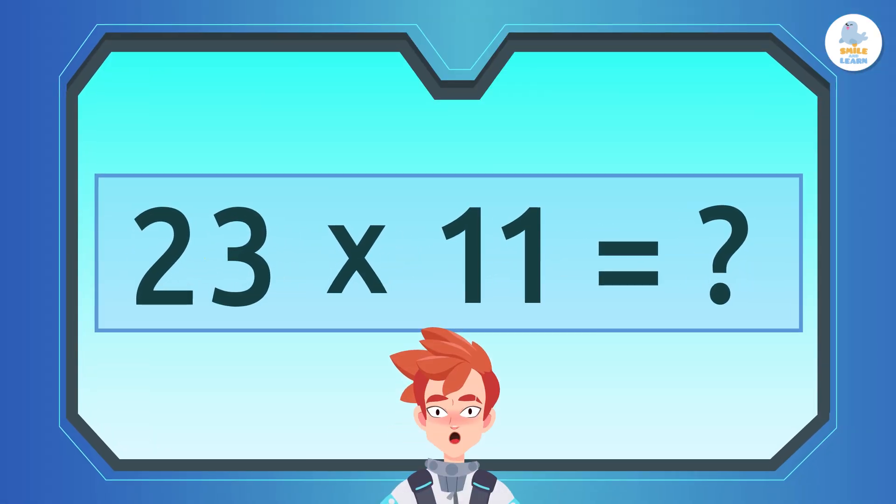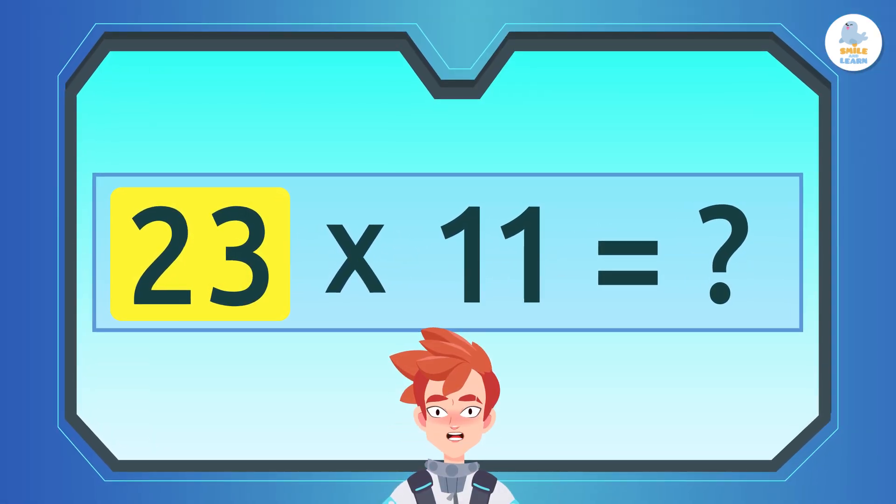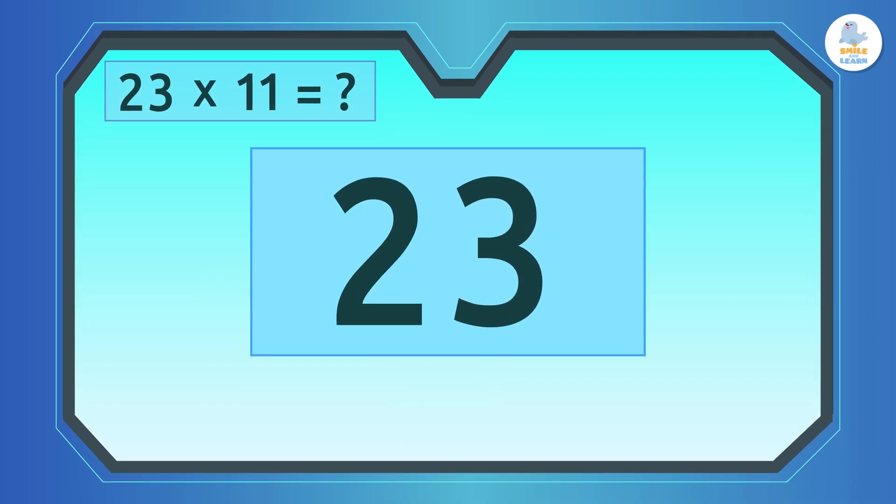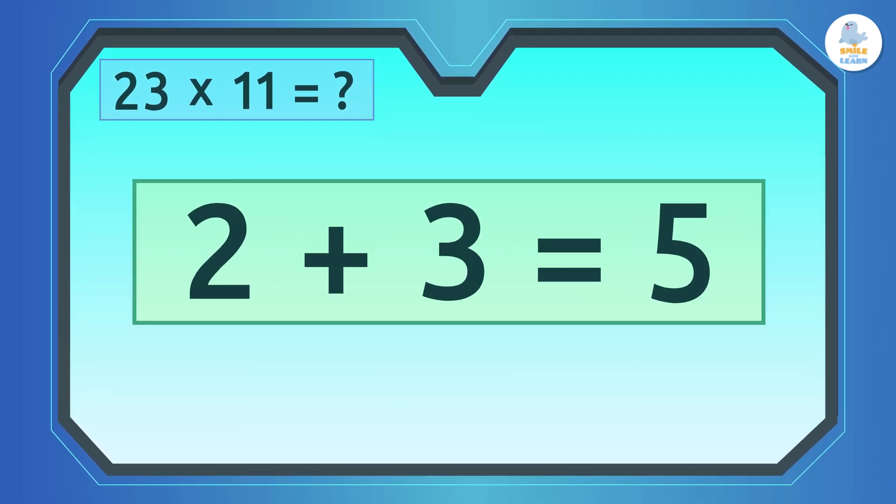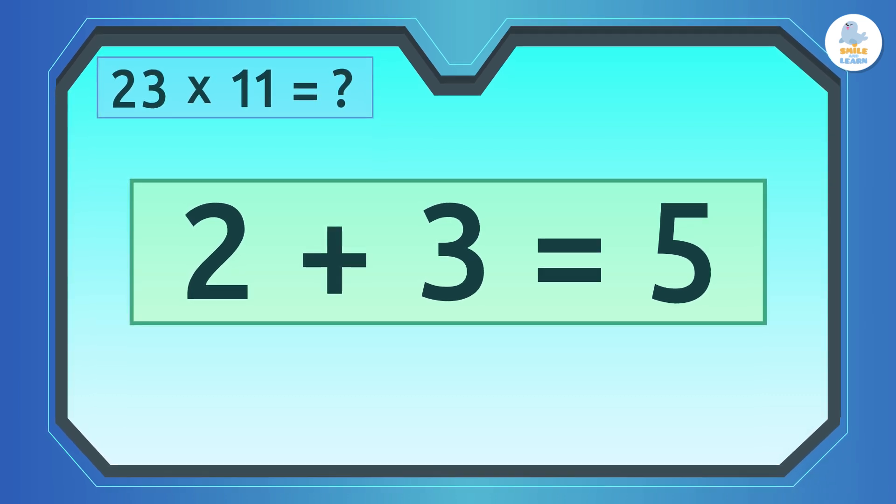Here's the trick. First, let's separate the digits of the number that is not 11. That is, 2 and 3. Then, add them together. 2 plus 3 is 5, right?